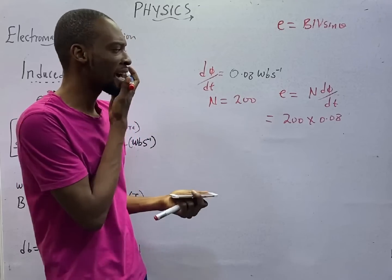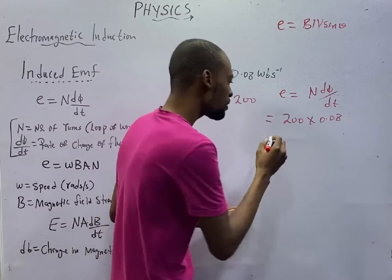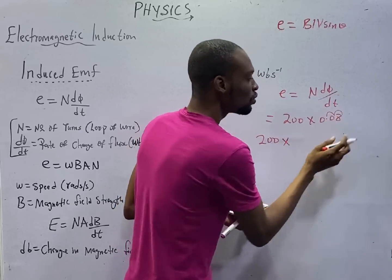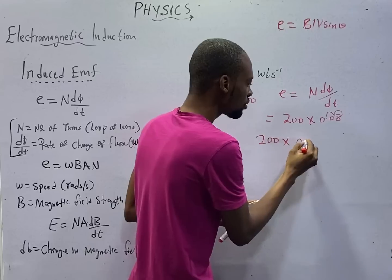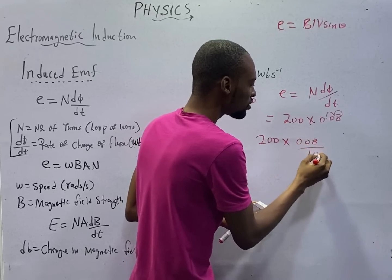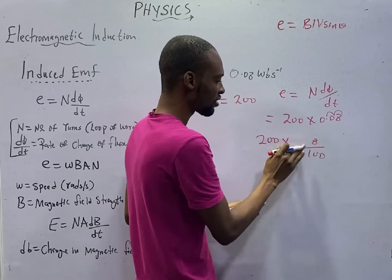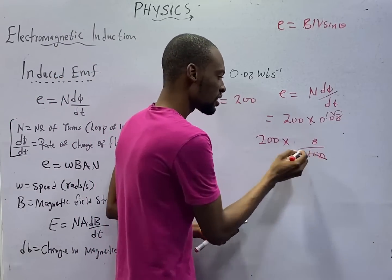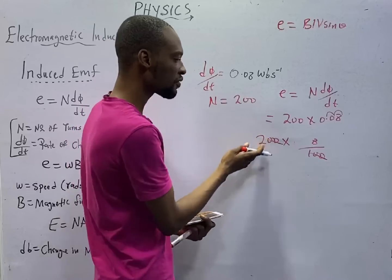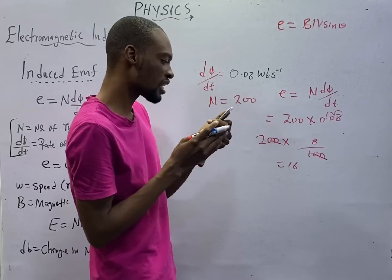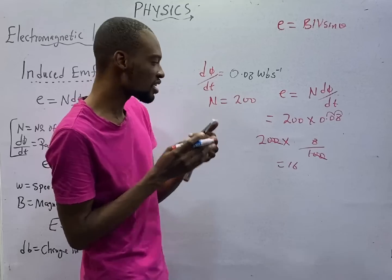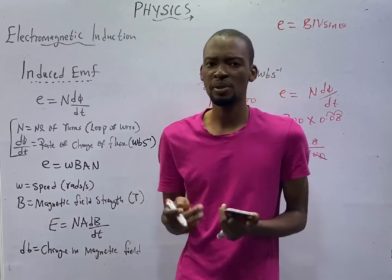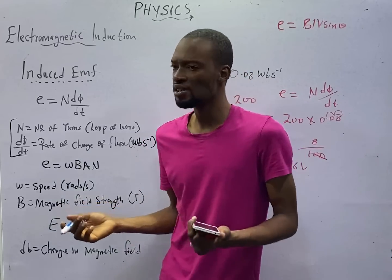I may not need calculator to solve this. I will simply say 200 times 1. I moved 2 times to get to the end, times 0.08 over 100. This is 200 times 8 over 100. Two zeros cancels two zeros here. I have 2 times 8, that is 16. The answer is 16 and EMF is in volts. 16 volts is the correct option.